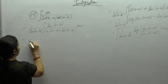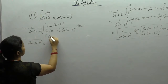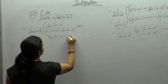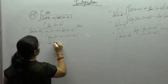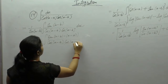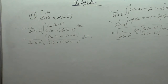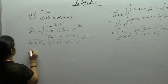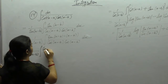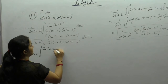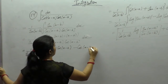Again we repeat the same steps: add and subtract x, and we will get sin(x minus b) minus (x minus a). Now apply the formula sin(a minus b) = sin(a)cos(b) minus cos(a)sin(b).